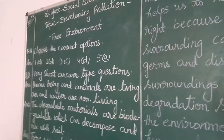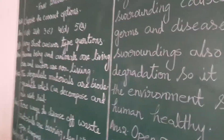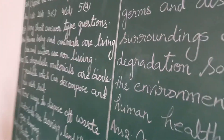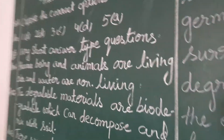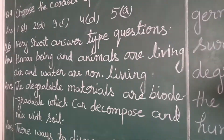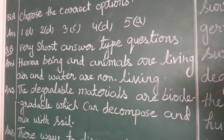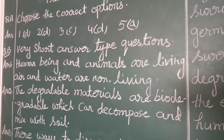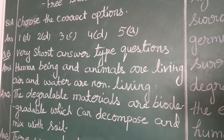Number 1. Give any two examples of living and non-living things. Answer: human beings and animals are living things. Air and water are non-living things.